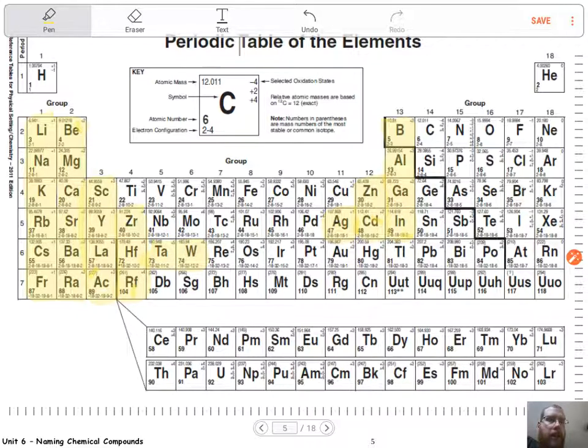So these guys right here, molybdenum right there, these guys right here. We're not going to worry about down here with the lanthanides and the actinides. You're never going to see compounds dealing with those. Uranium, you'll see when we get to nuclear, but it's not going to be in a compound.